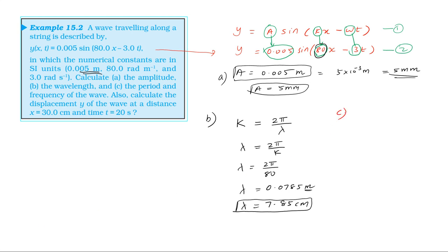Now for the time period. The angular frequency omega equals 2π divided by T, so the time period T equals 2π divided by omega. Here omega is 3, so T equals 2π divided by 3. The time period is 2.094 seconds.